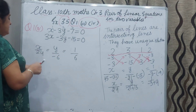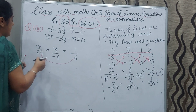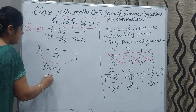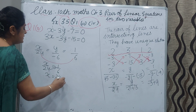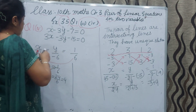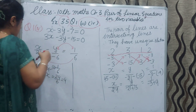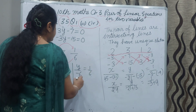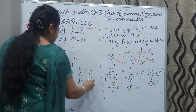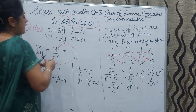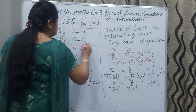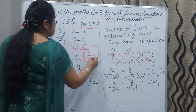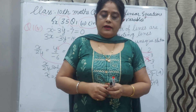Now we compare. x upon 24 equal to 1 by 6, so x equals 24 upon 6, giving x equal to 4. Then y upon minus 6 equal to 1 by 6, so y equals minus 6 upon 6, giving y equal to minus 1. So the answer is x equals 4 and y equals minus 1. Hope you understood, and thanks for watching.